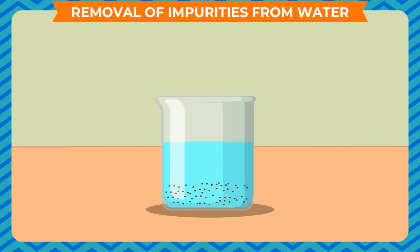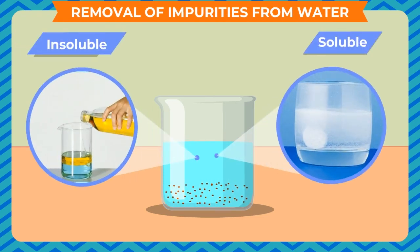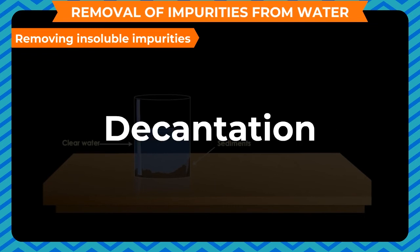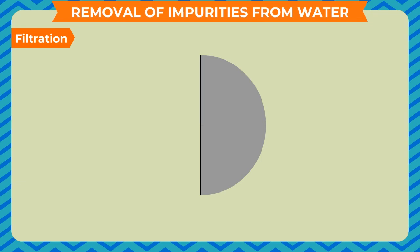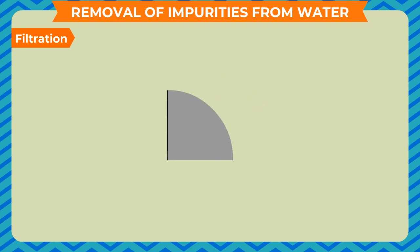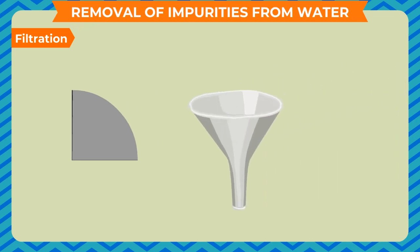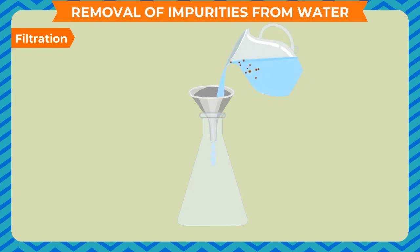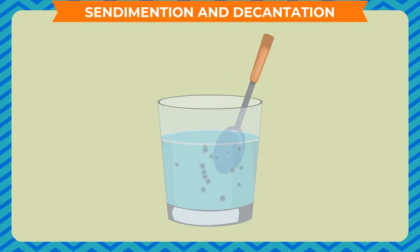Removal of impurities from water: insoluble impurities are removed by various methods like separation, filtration, sedimentation, and decantation. Filtration: fold a sheet of filter paper into half and then into quarters — it takes the shape of a cone when opened. Place it in a funnel, then place the funnel inside the mouth of a bottle. Pour a mixture of sand and water into the funnel — clean water collects in the glass and insoluble impurities remain on the filter paper. This process is called filtration.